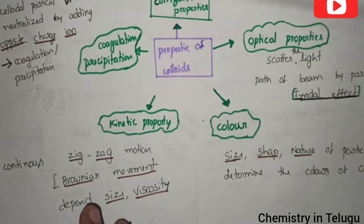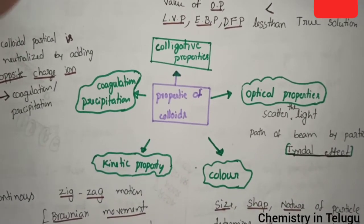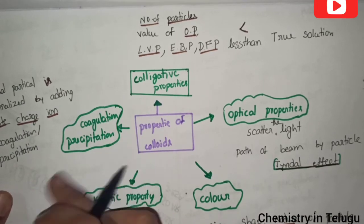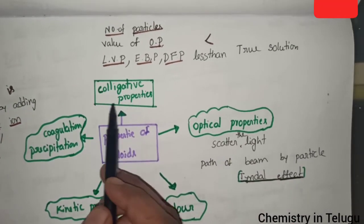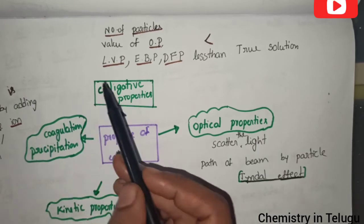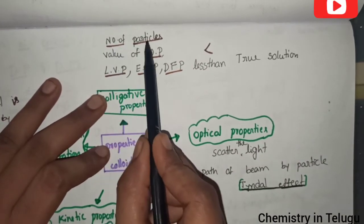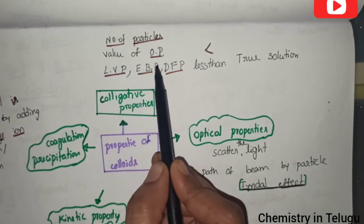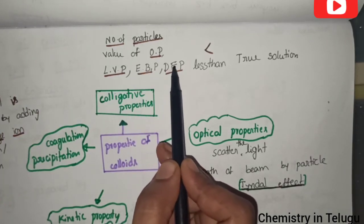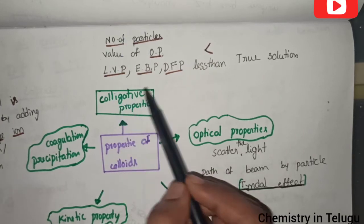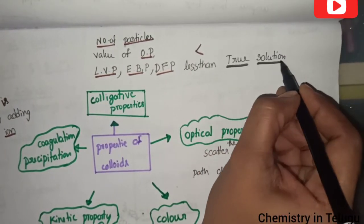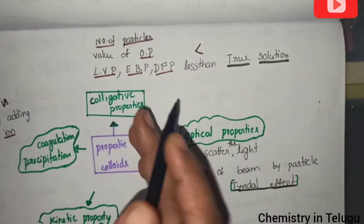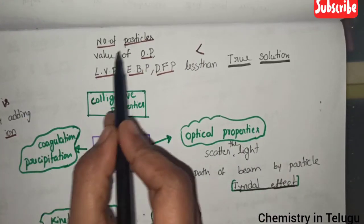Let's look at these five properties simply. Properties of colloids: the first property is the colligative property. The number of particles, value of osmotic pressure, lowering vapour pressure, elevation in boiling point, and depression in freezing point are all less than compared to true solution. These total values are less than those in true solution.